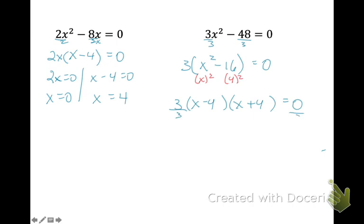Now to solve, we can divide our 3 away, and then set both of these equal to 0. So we'll add the 4 over and subtract it. So our two answers are 4 and negative 4. Let's keep going.